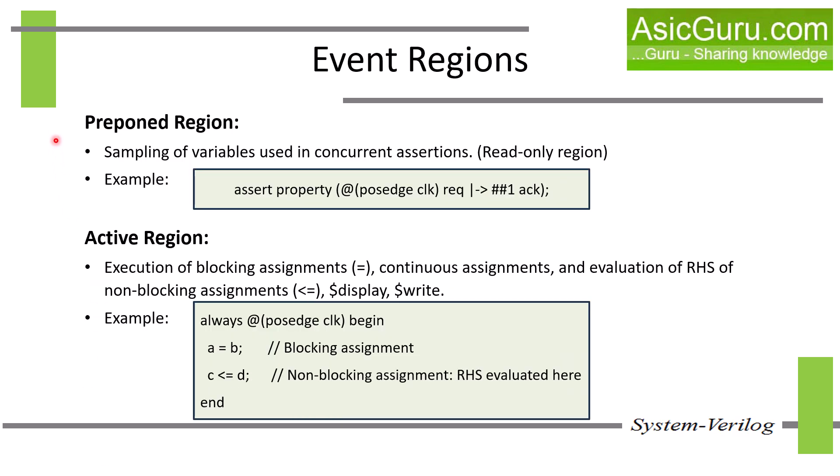The first region is the prepone region. This region is used to sample values that are used by concurrent assertions. Note that this is a read-only region. Only the values of variables that are used in assertions are sampled in the prepone region of the current time slot. The actual assertions are evaluated during the observed region. This region executes immediately after advancing simulation time, and it executes only once in each time slot — there is no way to execute this region again in the same time slot.